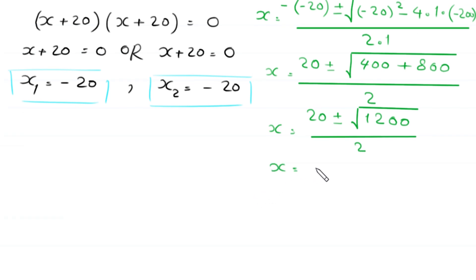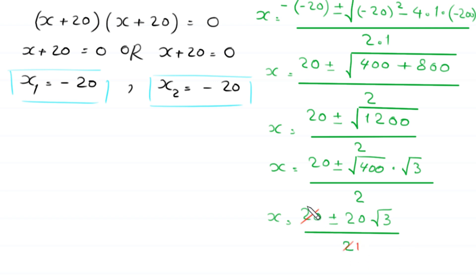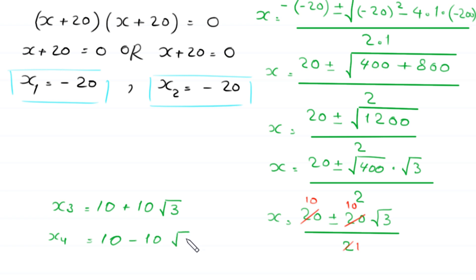Continuing: x equals 20 plus or minus square root of 1200, divided by 2. The square root of 1200 equals square root of 400 times square root of 3, which equals 20 root 3. So x equals 20 plus or minus 20 root 3, divided by 2. Therefore x₃ equals 10 plus 10 root 3 and x₄ equals 10 minus 10 root 3. These are the four solutions of the equation.